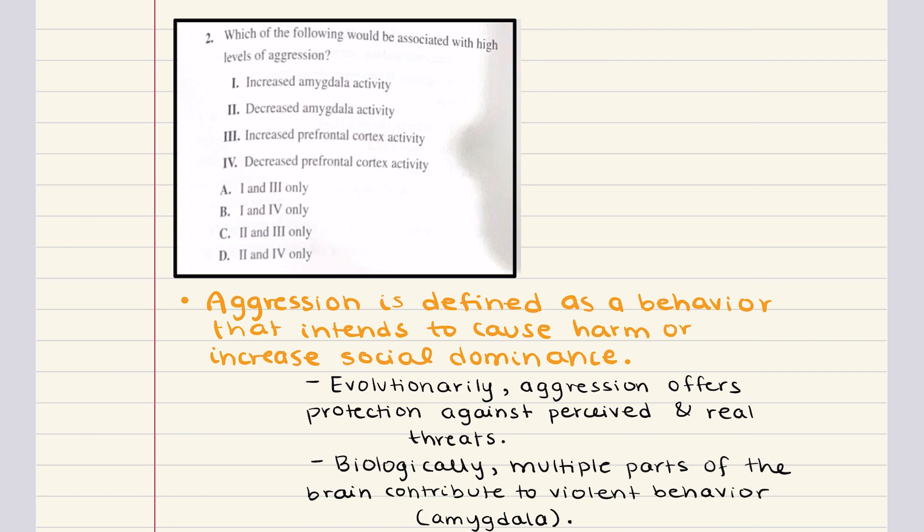Now when we talked about aggression, we said that aggression is a physical, verbal, or non-verbal behavior with the intention to cause harm or increase social dominance. And we said how there are multiple parts of the brain that contribute to violent behavior. Now the amygdala is one of those. The prefrontal cortex is another. Activity of the amygdala is going to increase aggression. Now as for the prefrontal cortex, this should control aggression.